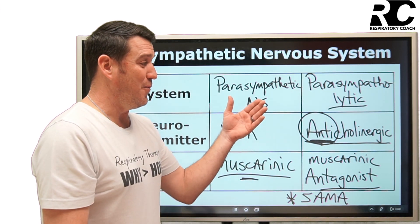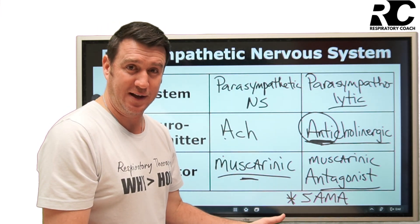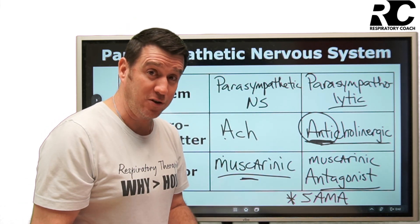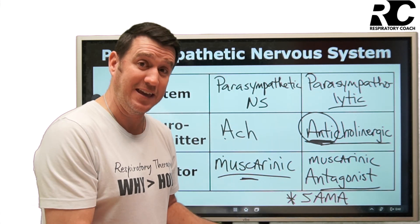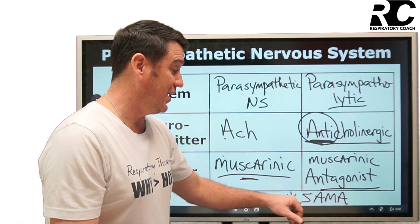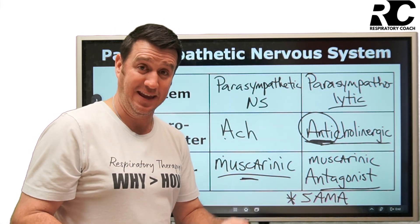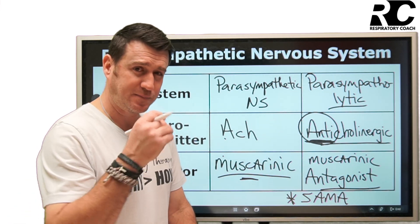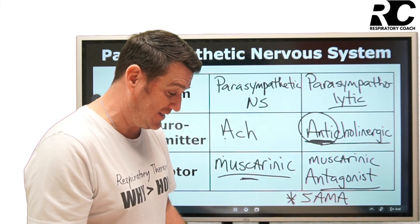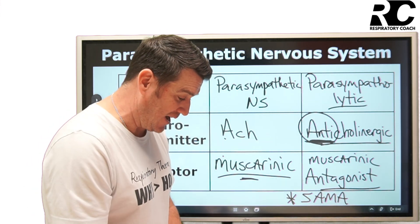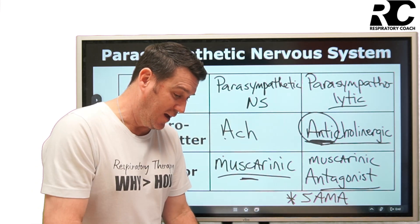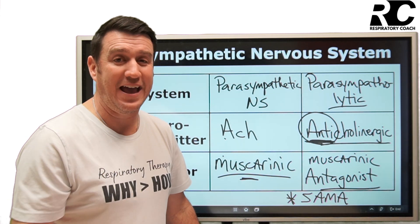These drugs block those vagally mediated changes that happen within the airways — specifically bronchoconstriction, as Egan discusses. Ipratropium bromide is the only short-acting muscarinic antagonist — the only SAMA. There are also LAMAs: L-A-M-A, Long-Acting Muscarinic Antagonists. Just like there were SABAs and LABAs, there are also SAMAs and LAMAs. The popular LAMA is tiotropium bromide; others include glycopyrrolate and aclidinium bromide, which have a much longer-lasting effect.